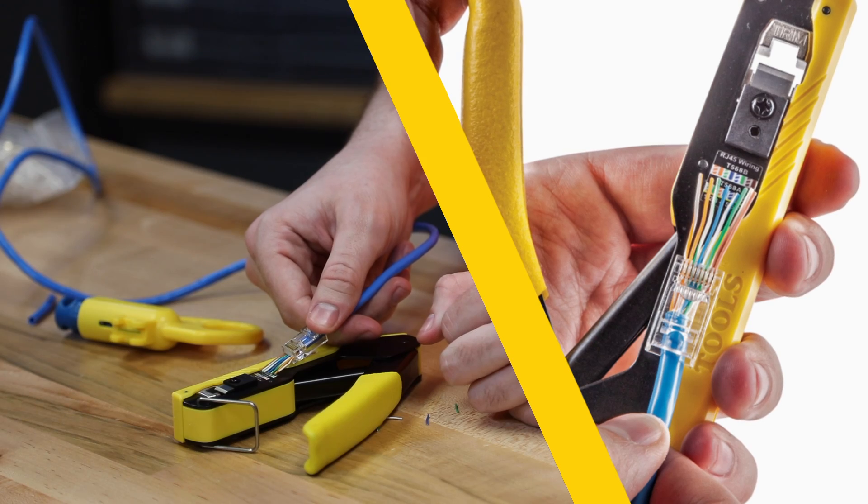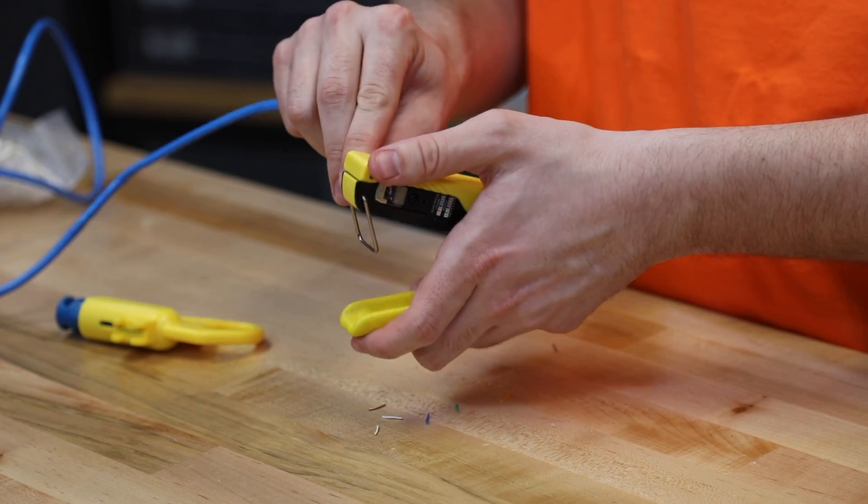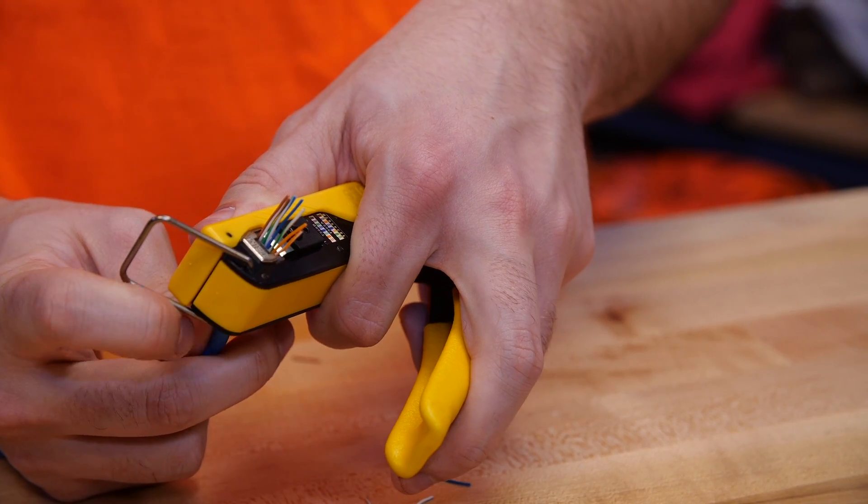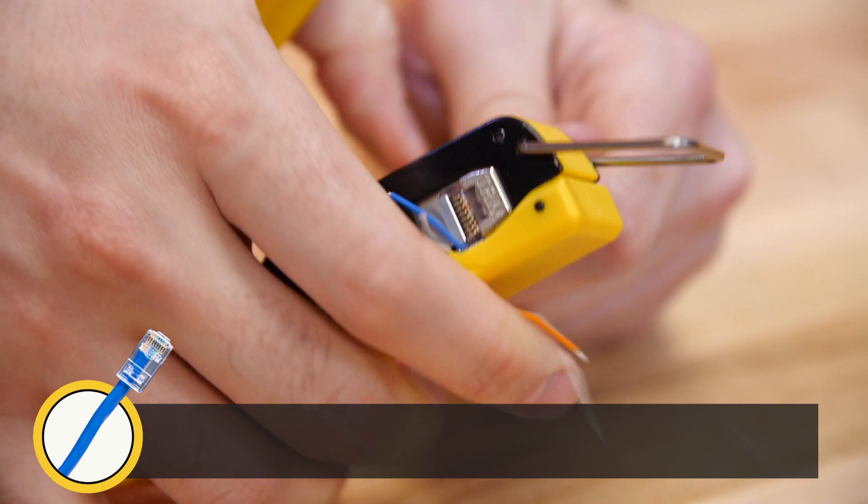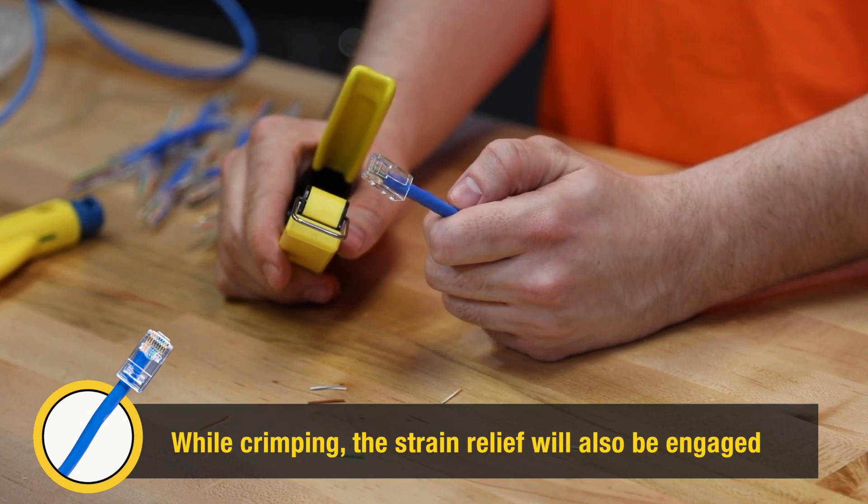When they're in the right order, pick up the tool, insert the plug through the crimper. Make sure that the closing clasp is out of the way. Simply squeeze the crimper shut. Then remove the newly terminated connector and you have completed your demonstration.